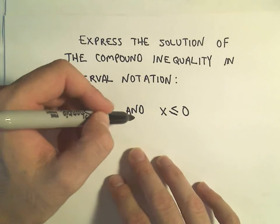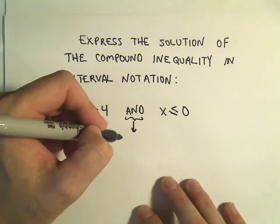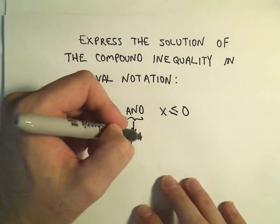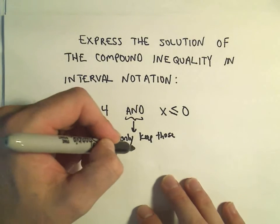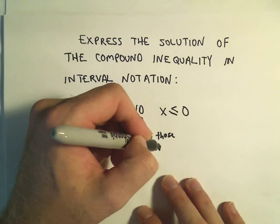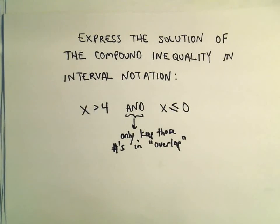But again just kind of mechanically what I do is I make a number line and when I see the word and it says only keep those numbers sort of in the overlap between these two inequalities.